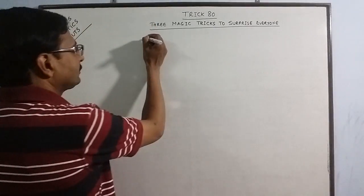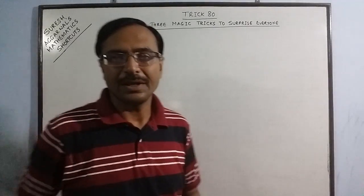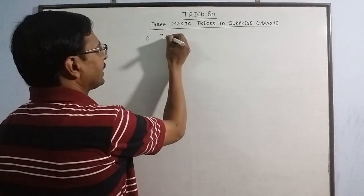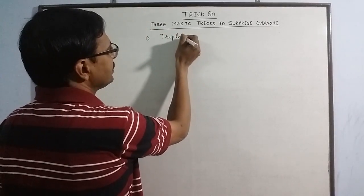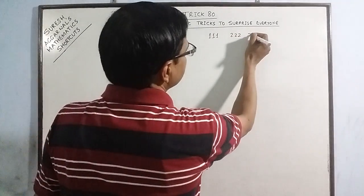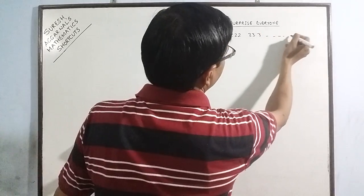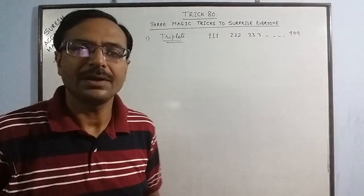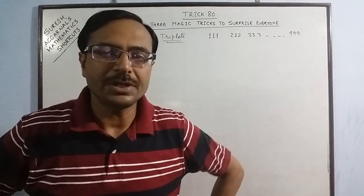Now the first trick I am going to tell you is regarding triplets. These triplets are actually the numbers which have repeated digits, that is triple one, triple two, triple three, and so on. You can write up to triple nine. So these are triplets having a single digit repeated three times.